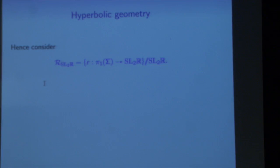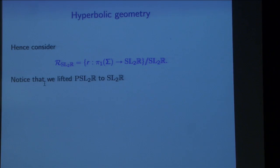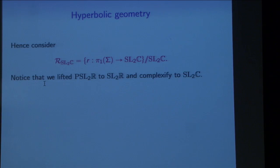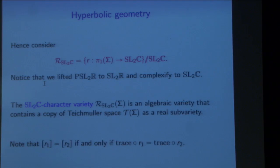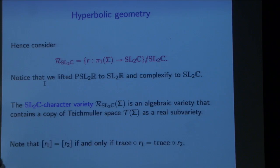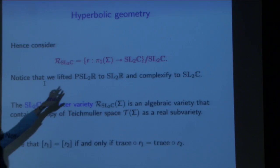Towards that end, we consider the set of all maps from the fundamental group into SL2R. I lifted from PSL2R to SL2R because that makes life easier, and I'll complexify because complex numbers are easier — they're a field. This gives us the SL2C character variety. The advantage is that it's an algebraic variety so you can do algebra on it, and it still contains a copy of Teichmüller space inside it. These double bars mean it contains characters: any two maps are the same in this space if their traces are the same — that's why it's called the character variety.